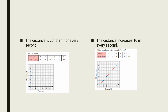The second graph: the distance increases by 10 meters for every second. The car is at initial position O, and for the first second it reaches 10 meters. The second second it increases by another 10 meters to reach 20 meters. The third second adds 10 more to reach 30 meters, then 40 meters, and finally at the fifth second it reaches 50 meters — an increase of 10 meters every second.